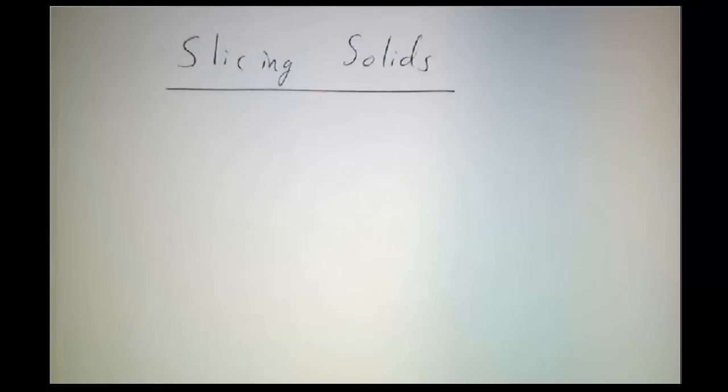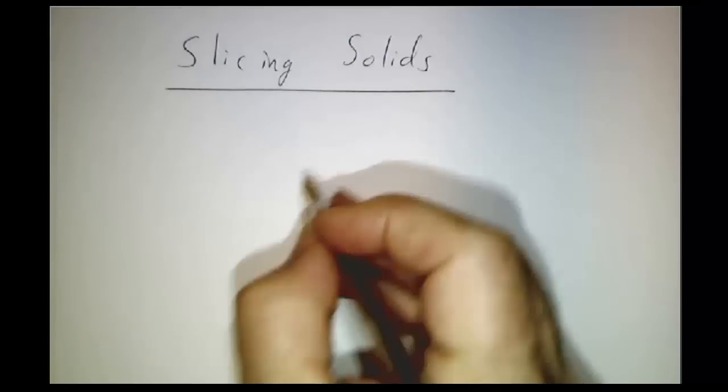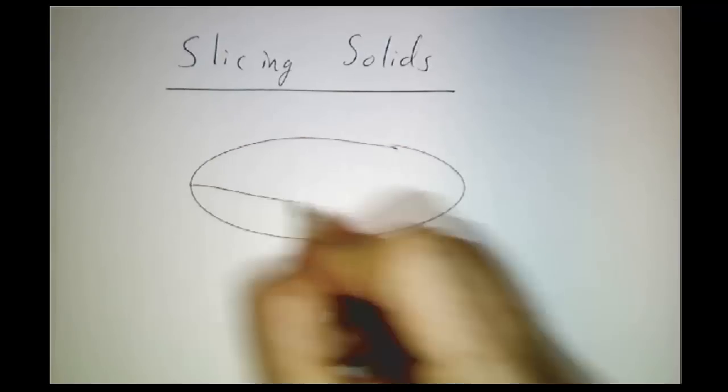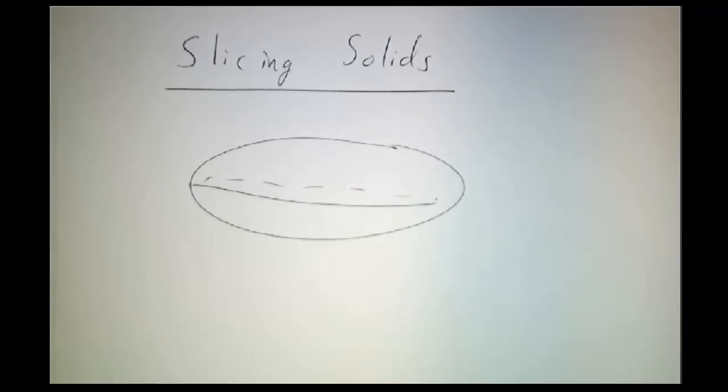In the last video, we talked about how to get areas by integration. In this video, we're going to learn how to do solids. So let's suppose that we have some solid region. Say, looks like that.